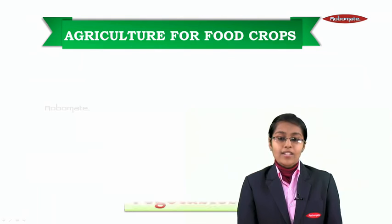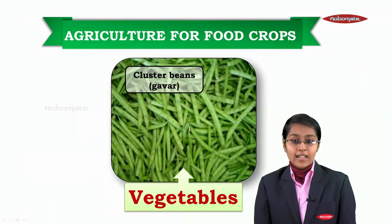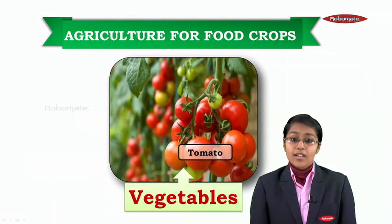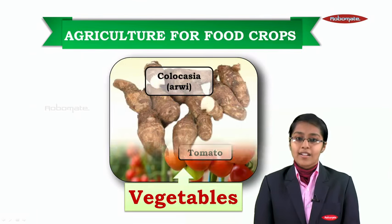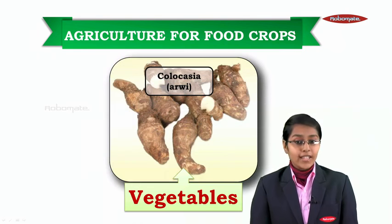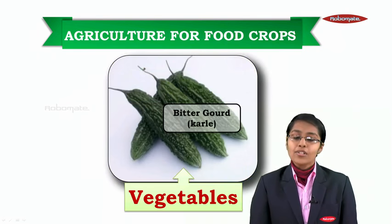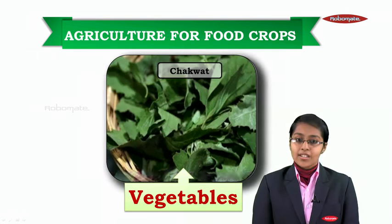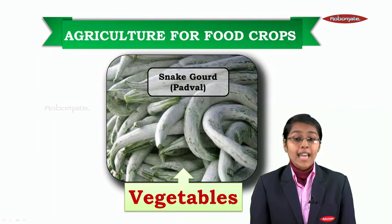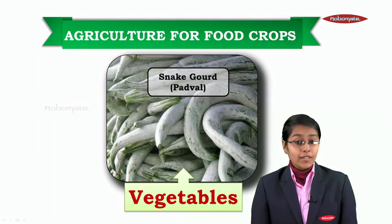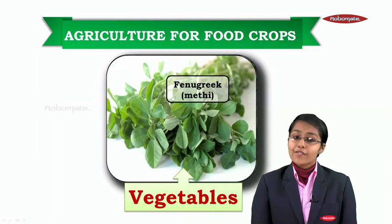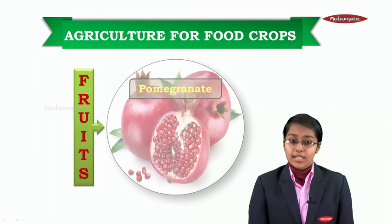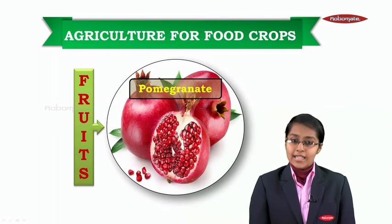It also includes some vegetables like cluster beans called as gawar, tomatoes, colocasia or arwee, bitter gourd or karela, brinjal, chakwat, snake gourd also called as padwal, and fenugreek called as methi. It also includes some fruits like pomegranate,